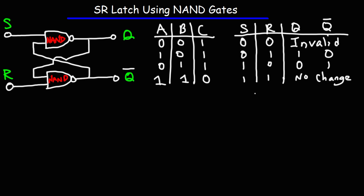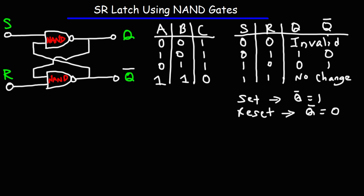Here are some things you need to remember for this circuit. When you hit the set button, you're setting Q bar to 1, which means Q goes to 0. When you hit the reset button, you're going to reset Q bar back to 0. I'm going to push the reset button so the circuit is in its original standard condition. Once we hit that reset button, Q is going to be 1 and Q bar is going to be 0. We'll start with those states to simplify the explanation.